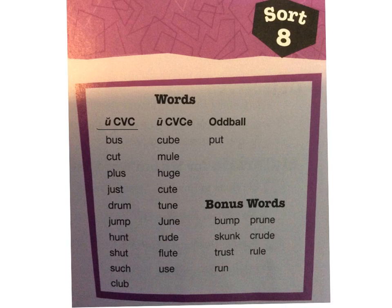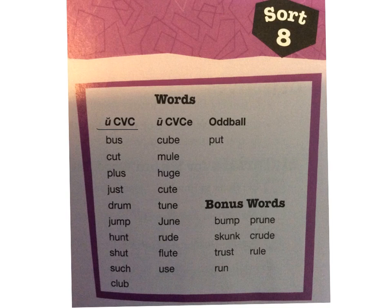When we look under our long U words with our consonant, vowel, consonant, E pattern, you have the words: cube, mule, huge, cute, tune, June, rude, flute, and use. And this week you only have one oddball word that we've already previously talked about, which is the word 'put.'